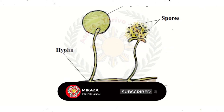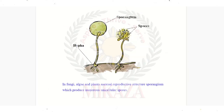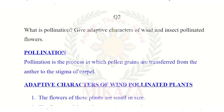Then, reproduction through spores. The structure is called a sporangium. From the sporangium, unicellular spores start to spread. This concept is especially associated with phylum bryophytes.